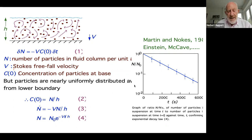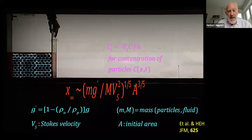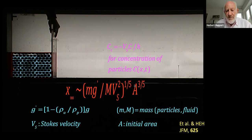Thank you for interrupting and asking questions — please all of you interrupt and ask questions as you wish. Now, if we do a box model calculation and consider some particles in fluid behind the gate, and then lift up the gate, just as I did in the experiment yesterday, the concentration of particles C, which will vary with x and t, will obey this differential equation: dC/dt is minus Vs, the Stokes velocity, times the concentration over the height. The height changes with time and the concentration changes with time. You solve the equations — it's in this paper in JFM 625.